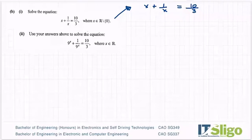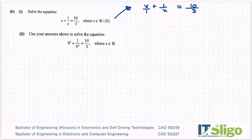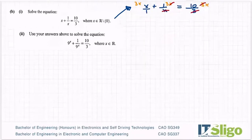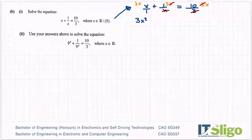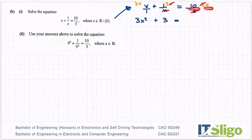I'm going to multiply this side by 3x, this part by 3x, and this part by 3x. The x cancels with the x on top, and the 3 cancels with the 3 there. So I have 3x × x = 3x²; the x's here have cancelled leaving just 3; and the 3s have cancelled giving 10x. I can see a quadratic forming, so I'll bring everything to one side.